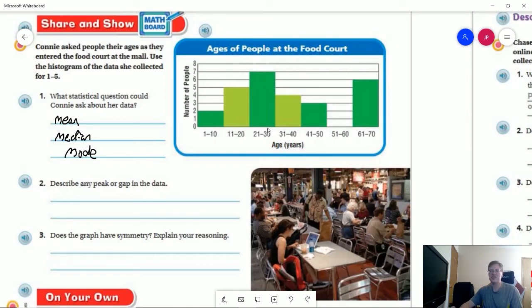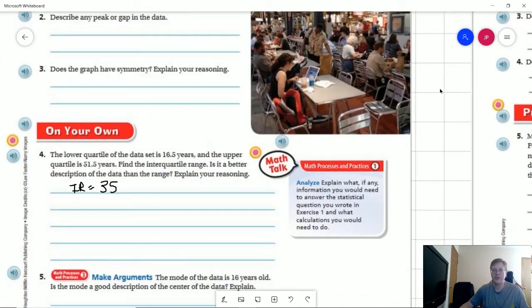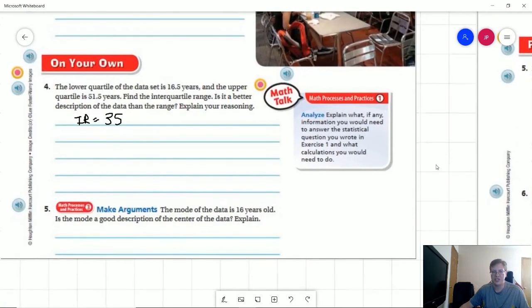Now, if your purpose is to show how spread out the data is or how spread out the ages are in the food court, then the range would be a much better option. That shows we have people all the way from one year old up to 70 years old. Depending on what your purpose is could influence how you choose to represent that. I would argue that either one of those could potentially work depending on how you want to explain it.